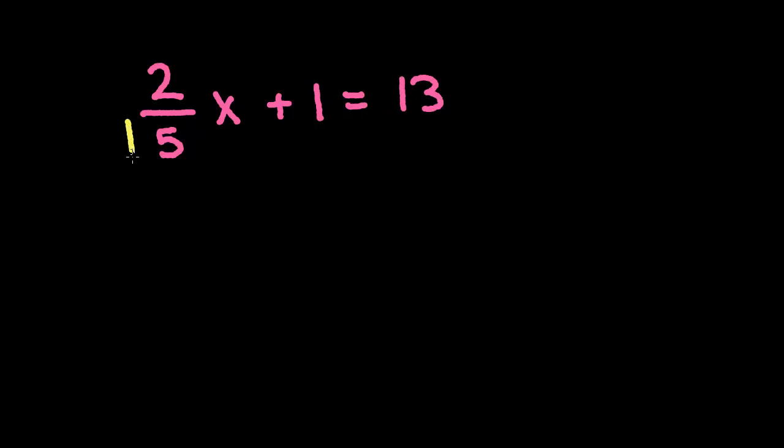So again, something's sitting right next to the x. So that's 2 fifths is sticky. So we're going to leave him until the end. So we want to deal with the inverse of plus 1, which is minus 1. So we're going to minus 1 from both sides.